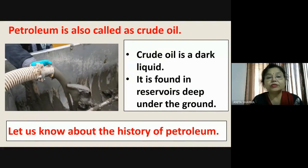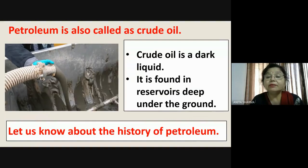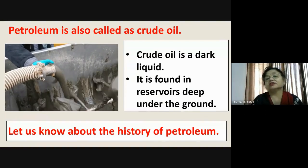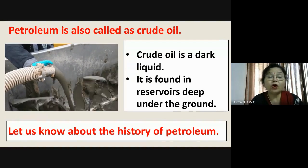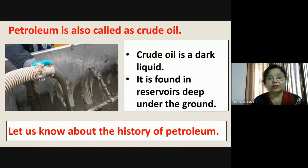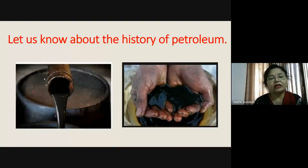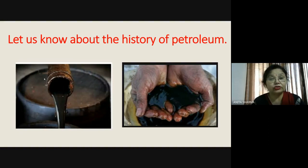Crude oil is a dark liquid. It is found in reservoirs deep under the ground — going very deep inside the earth's crust. Now let us know about the history of petroleum. It is very thick and found in many colors based on its constituents — sometimes greenish, yellowish, brownish, reddish, blackish, or grayish in color. It all depends on how it was formed and what its constituents are.